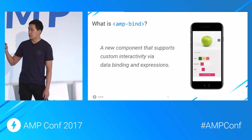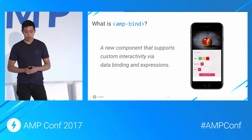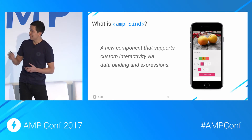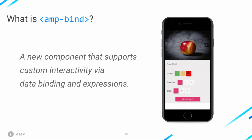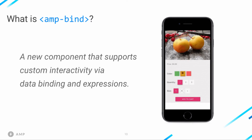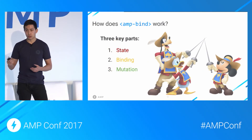On the right, you can see a sample that implements the e-commerce product page use case we saw on the last slide. In this case, you're buying apples with different colors and sizes. This is actually implemented using AMP bind, and the code is available on ampbyexample.com today. There are three main parts: state, binding, and mutation. We'll go through each of those.